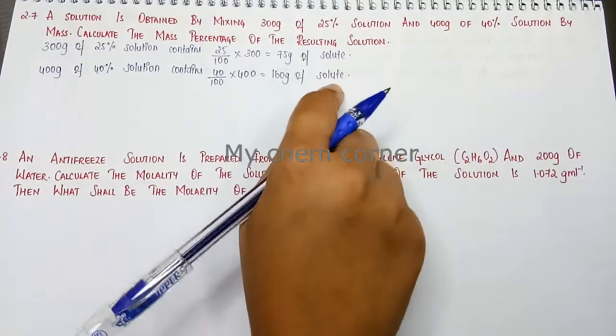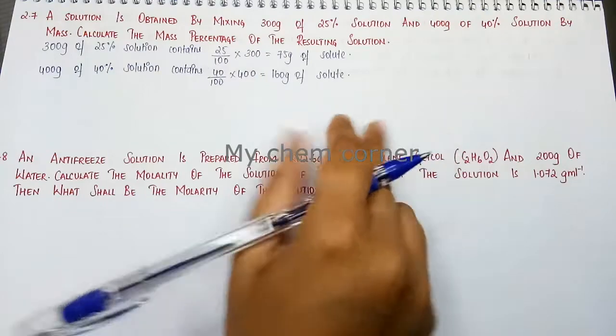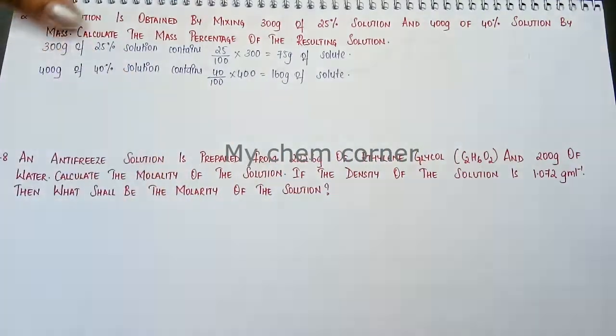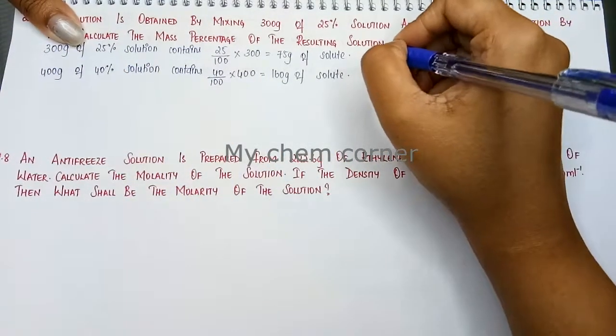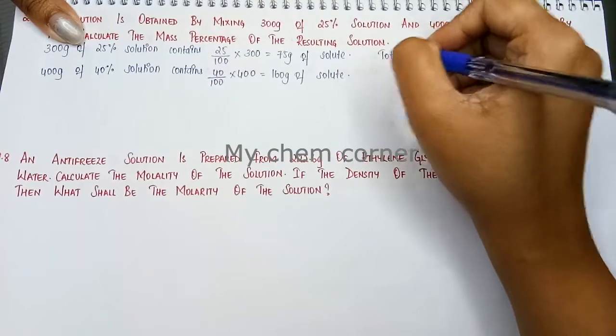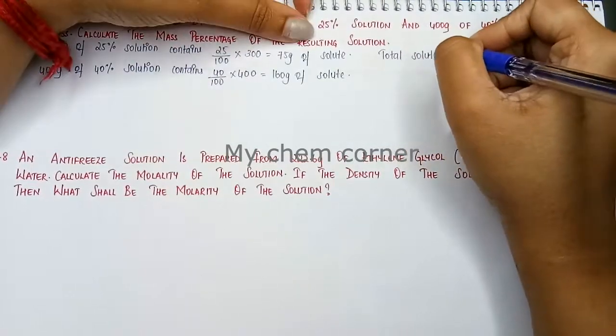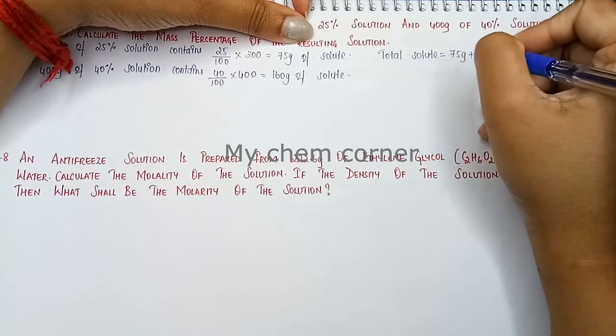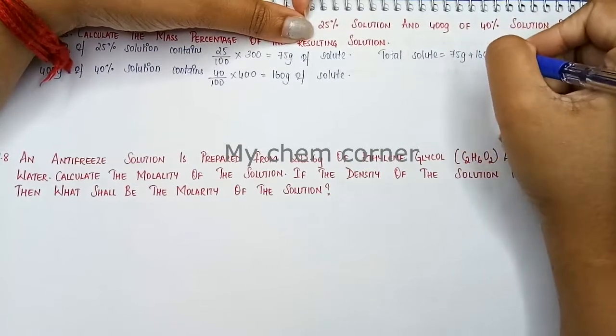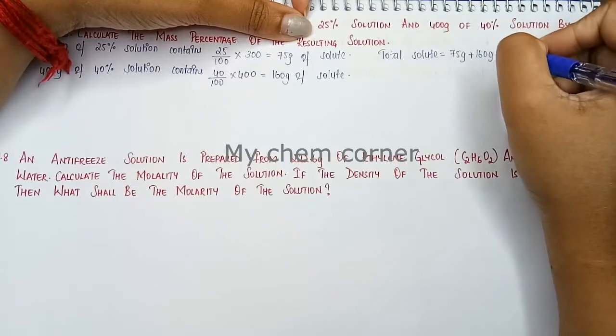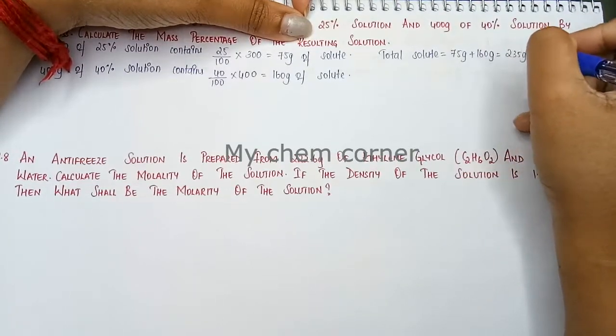So now I have two solutes. We'll add up both to get one single solute, so here we can say that total solute equals this 75 grams plus 160 grams. When I add both of it, I will get 235 grams of solute.